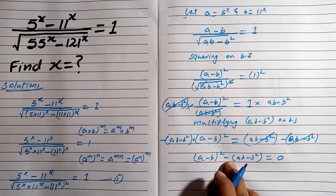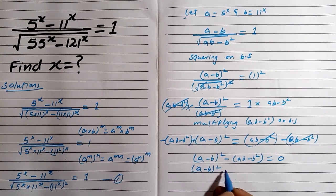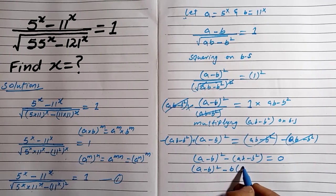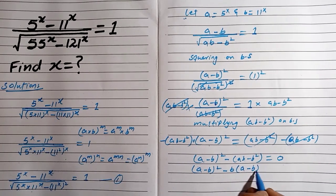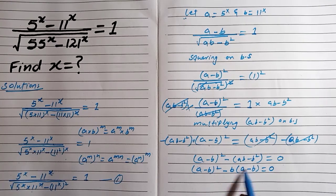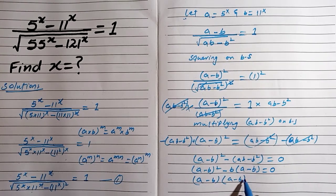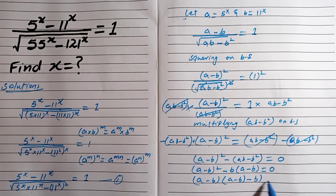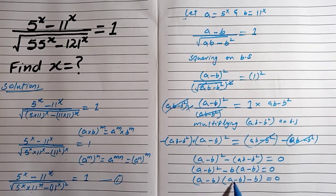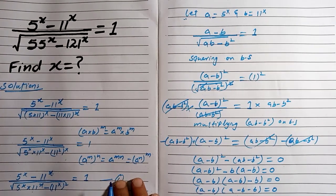In this term we take b as the common factor. So (a minus b) whole square minus b·(a minus b) equals zero. We also take (a minus b) as common, leaving (a minus b) multiplied by (a minus b minus b) equals zero, which gives (a minus b)(a minus 2b) equals zero.